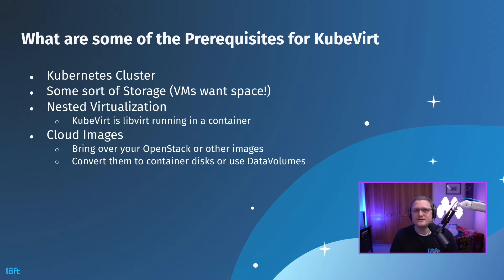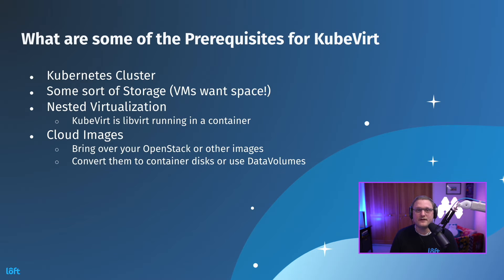What are the prerequisites for KubeVirt? You need a Kubernetes cluster and some storage, because virtual machines need space. You need nested virtualization enabled. KubeVirt is libvirt running in a container — not on the base cluster's libvirt — so it's nested virtualization within the container. You also need cloud images, which you'd bring from OpenStack, AWS, or wherever you're using them, and convert them either to container disks or use data volumes to copy and expand that data, then mount it as the volume the VM can access.